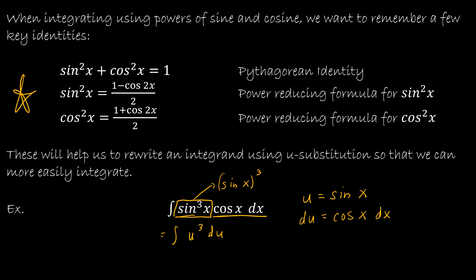It's now very easy to integrate. Integrating u³ gives u⁴/4 plus c. Replacing u with sine, the answer is sine to the fourth of x divided by four plus c, or equivalently one-fourth sine⁴(x) plus c. Easy enough on a question like this, but obviously they're not all going to be so nice — that's why we have all of these identities.